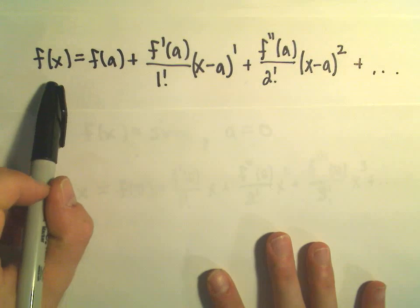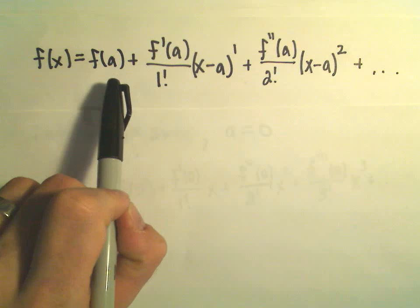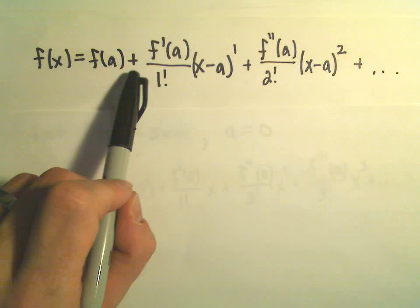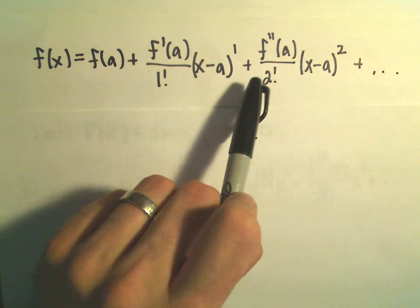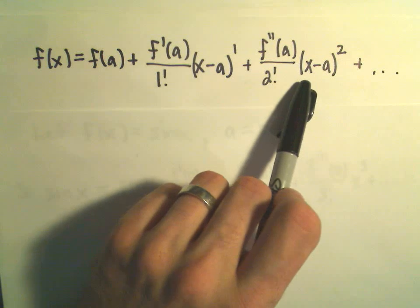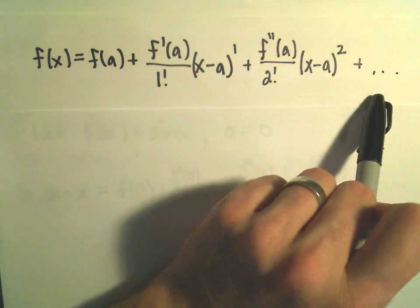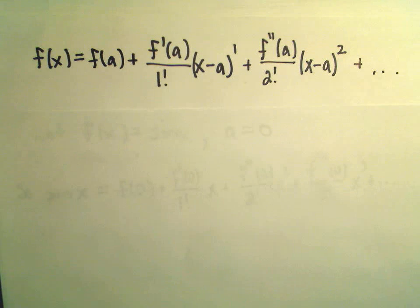For our function f that we're going to find the expansion for, we're centering at a equals zero. So, we have to fill in f of a plus f prime of a over one factorial x minus a to the first, plus f double prime of a over two factorial x minus a squared. We would have f triple prime of a over three factorial x minus a cubed, and keep going on.